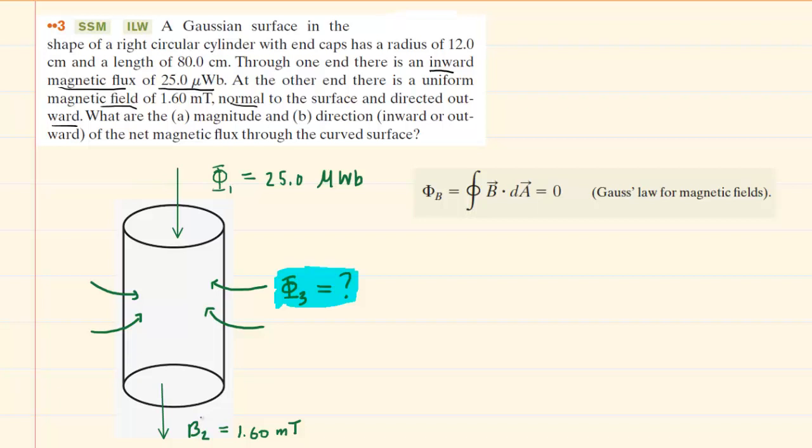And then the question wants us to determine the magnetic flux that is going through the curved surfaces. So we have drawn some hypothetical magnetic field lines that are entering the curved portion of the cylindrical surface. We don't know the value or even the direction of that magnetic flux, so we've labeled that as an unknown, and it's highlighted to remind us what we're looking for.